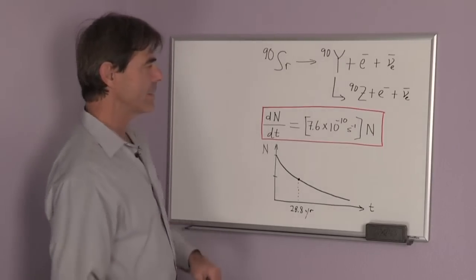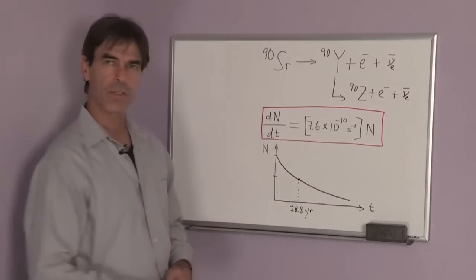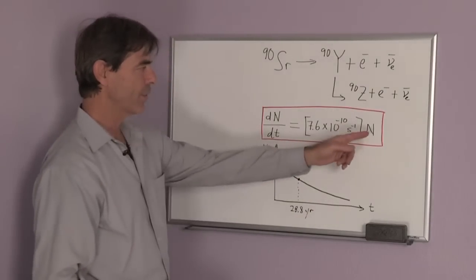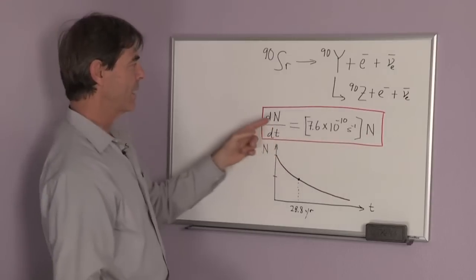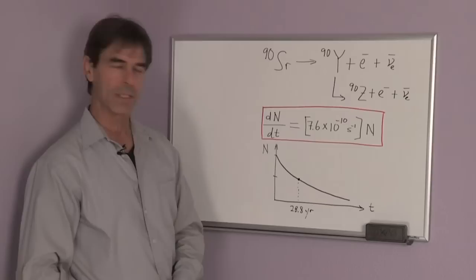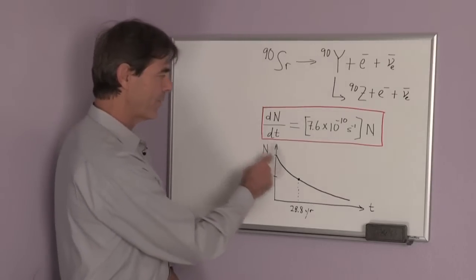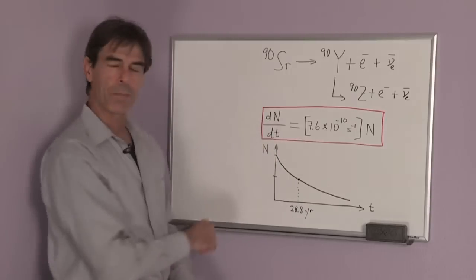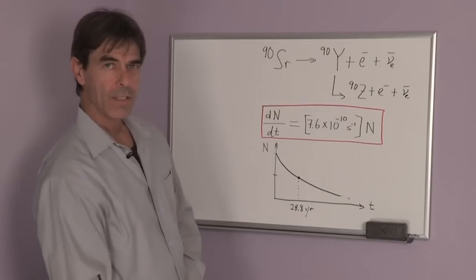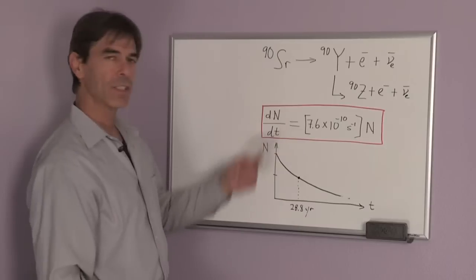Now, the number of decays per second in any sample of strontium-90 is proportional to the amount of strontium-90 you have. So if N is the amount you have, then this is the decay rate: 7.6 times 10 to the minus 10 decays per second. And if we were to make a graph of how the amount of strontium-90 decreases, we would see this—it's called an exponential curve—and it decreases to the value of one-half of your original sample in 28.8 years. So this is the decay equation for strontium-90.